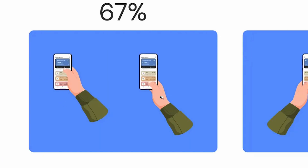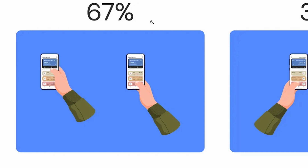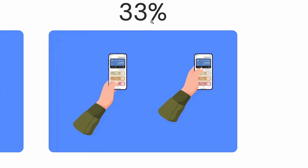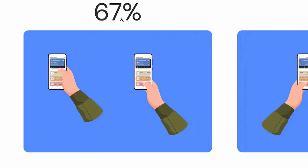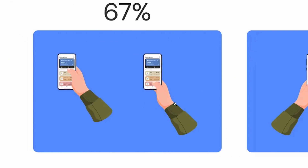We have both right-handers and left-handers. So right-hand side, around 67% of people use it. Left-hand side, around 33% of people. So based on that, we have to design. How do you navigate your thumb? Mostly primary buttons are very helpful.